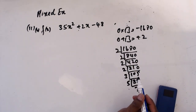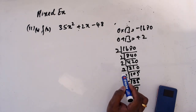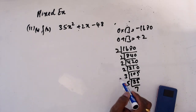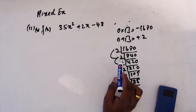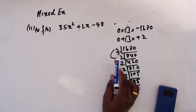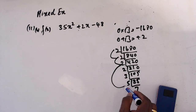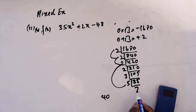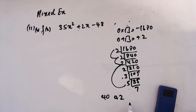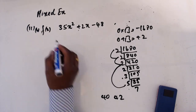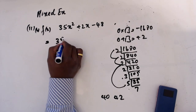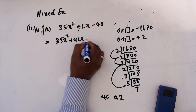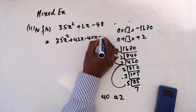So what are the options: 2 times 2 is 4, 8 times 5 is 40, and 2 times 3 is 6, so 42 and 40 are two numbers that should work. So then: 35x² + 42x - 40x - 48.